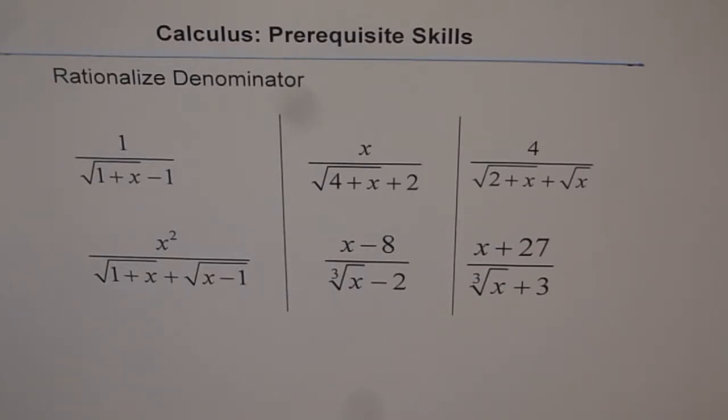In case you have square roots or radicals in the numerator, then you should rationalize numerator. In case you have radicals in both numerator and denominator, then both need to be rationalized. So the next worksheet is on that.